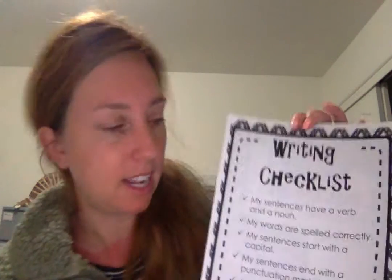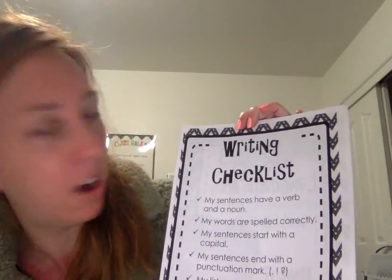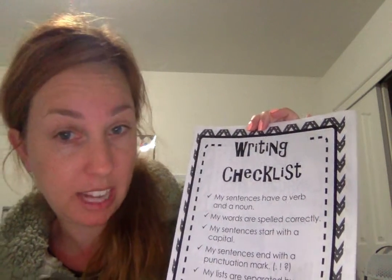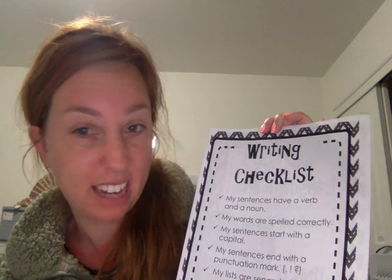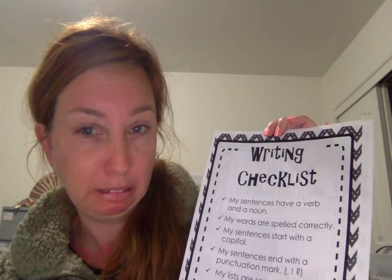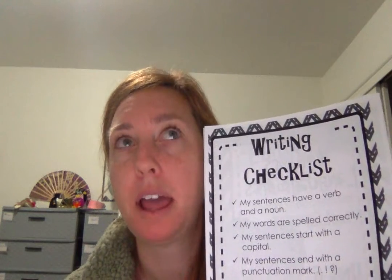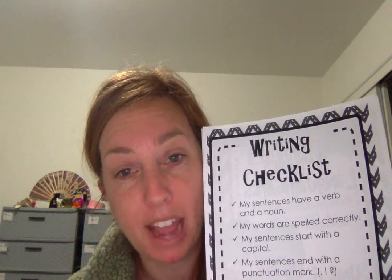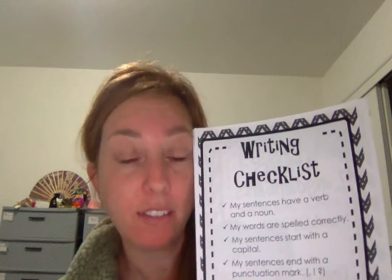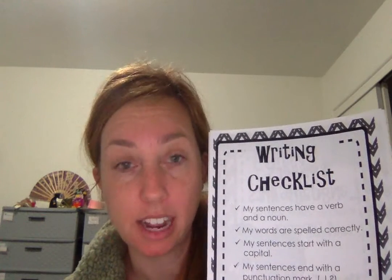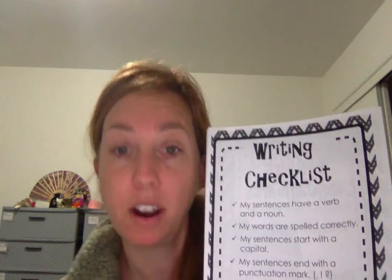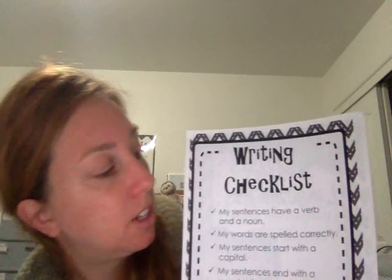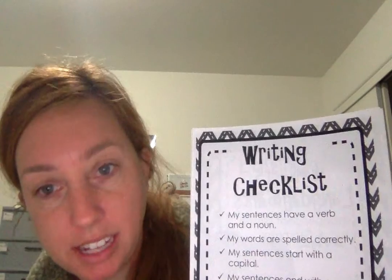So first, it says my sentences have a verb and a noun. I can't just say 'my cat black' — I have a noun, 'cat,' and even an adjective, 'black,' but I don't have to have an adjective to have a sentence. I could say 'my cat runs.' I have a noun, 'cat,' and a verb, 'runs.' So to make it an actual sentence, it has to have a noun and a verb.